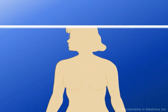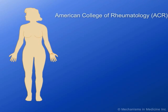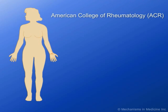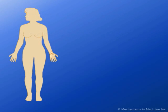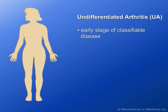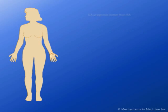UA envelops a heterogeneous group of recent-onset arthritides that are not classifiable within established criteria sets, such as those of the American College of Rheumatology, ACR, and the European League Against Rheumatism, EULAR. UA may represent either an early stage of a classified form of arthritis that will eventually be definable, part of an overlap of more than one disease, a partial form of a defined disease, or a disease of unknown origin.